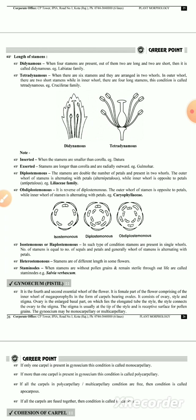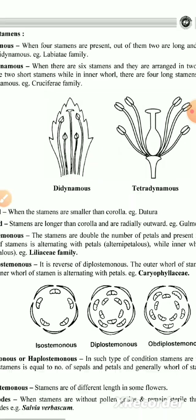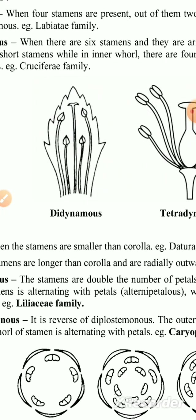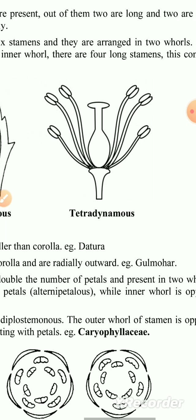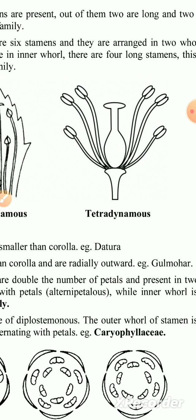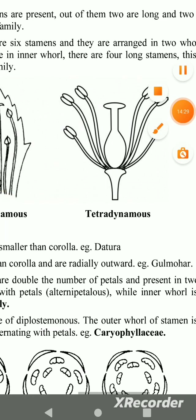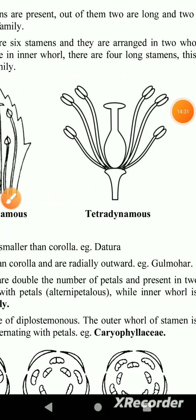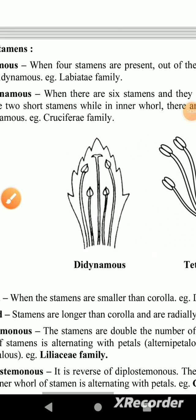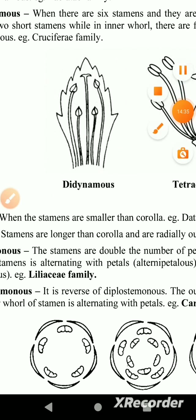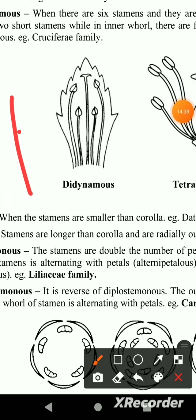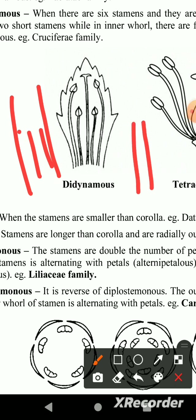Regarding the length of the stamens: the first type is didynamous — total number of stamens is 4, arranged as 2 long and 2 short. Tetradynamous — total number of stamens is 6, arranged as 4 long and 2 short.